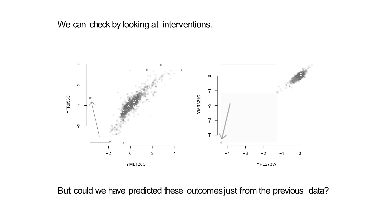The other example is the opposite. Here you intervened on YPL, and the activity of YMR — the gene on the y-axis — has really been brought down a lot. You would say that intervention was successful, because intervening on YPL really changed the activity of YMR to be way outside its usual range. The question is: could we have predicted that in the first case the intervention is not going to be successful and in the second it is?